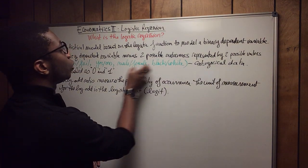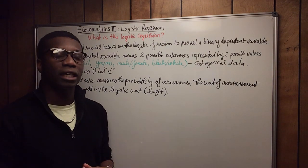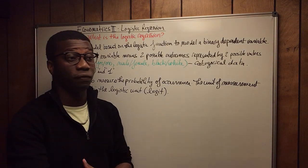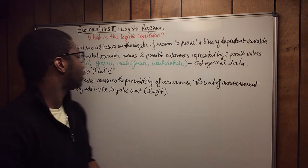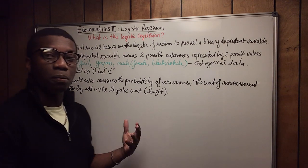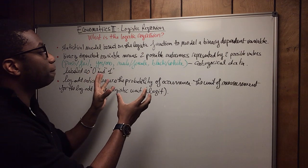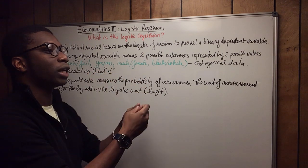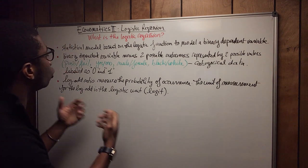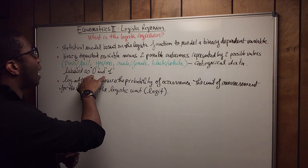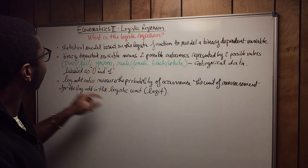The logistic regression deals a lot with categorical data, meaning the dependent variable in your data contains words. Because when you use a statistical package — whether Excel, R, Python, SAS, or SPSS — you cannot use words as a way to measure things. So you quantify them by labeling them as zero and one.